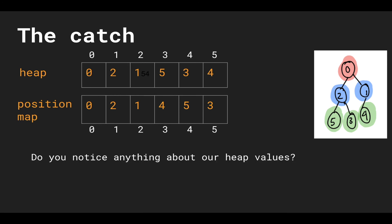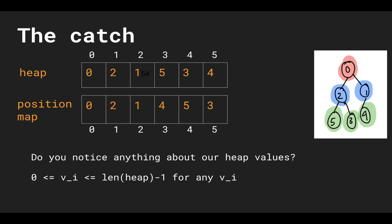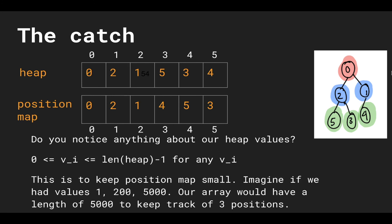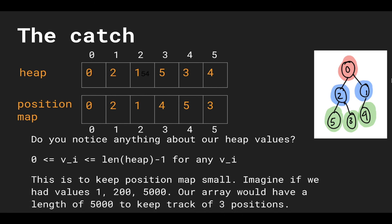This is the heap and position map we've been working with. Do you notice anything about our heap values? You'll notice that all of our values are greater than or equal to zero and less than or equal to the length of the heap minus one — so here, values are between 0 and 5 for a heap of size 6. The reason we need this is to keep our position map small. Imagine if we only had three values like 1, 200, and 5000 — our position map array would need a length of 5000 to track just three positions, which is not efficient at all.